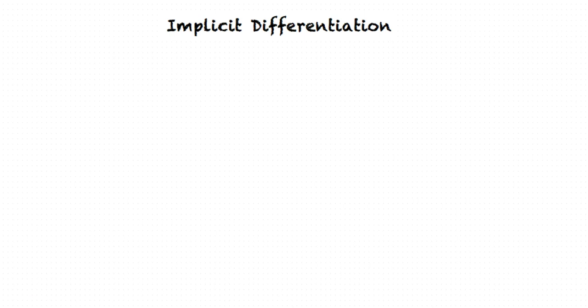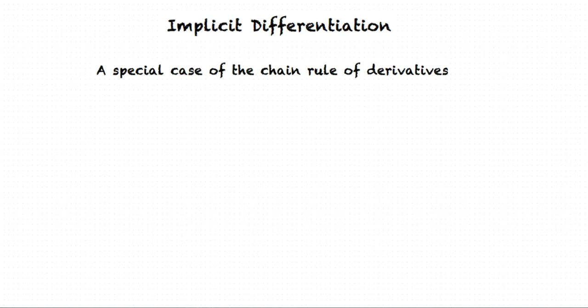What is the significance of implicit differentiation, and how is it different from normal differentiation? Implicit differentiation is nothing more than a special case of the well-known chain rule for derivatives. It makes use of the chain rule to differentiate implicitly defined functions.